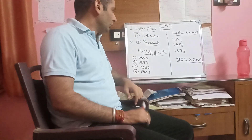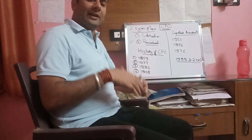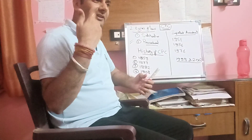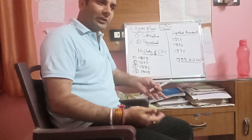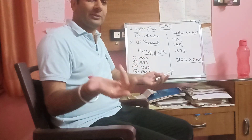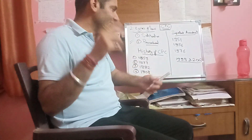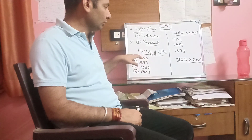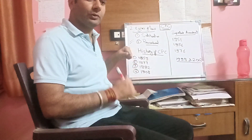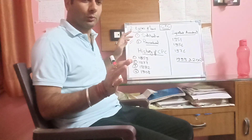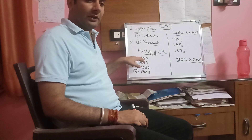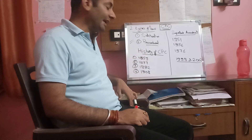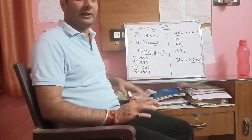Now, the history of CPC in India. You know that at the time of ancient Hindu period there were traditional laws. But when the British came to India, prior to 1859, there was no Code of Civil Procedure. But in 1859, this was the first time when the British enacted the Code of Civil Procedure in India.